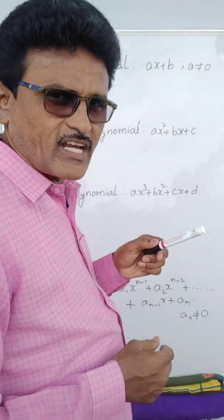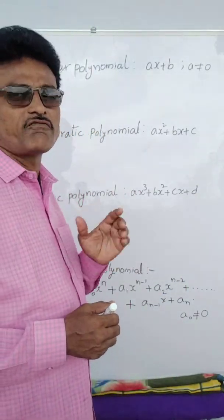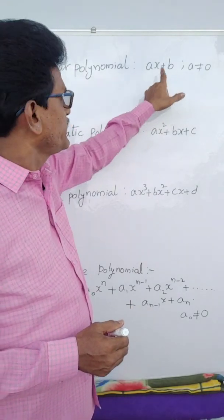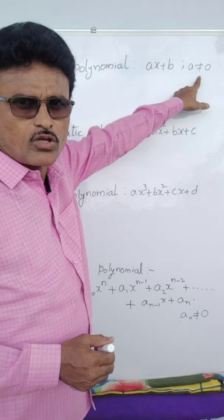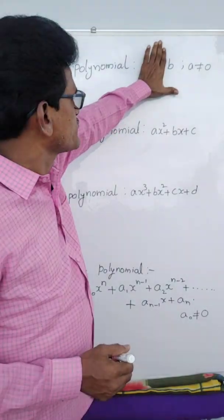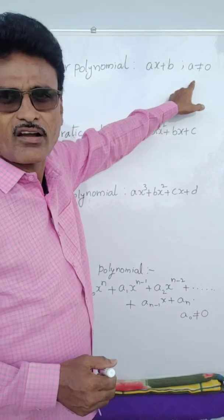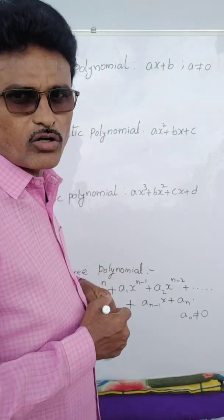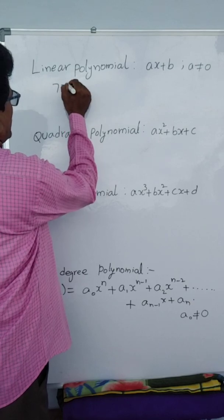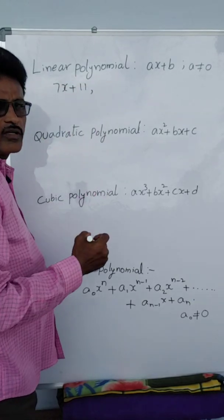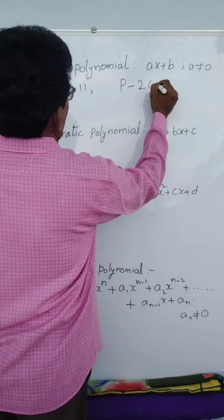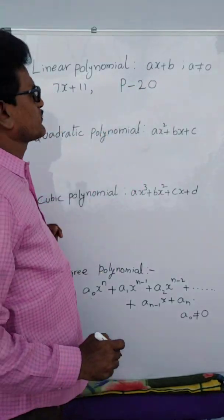Suppose degree of the polynomial is 1 — it means first degree polynomial. General form: ax plus b. Condition: a not equal to 0, because if a equals 0 this term will vanish and only b is there. So ax plus b with condition a ≠ 0 is the linear polynomial — it is a first degree polynomial.